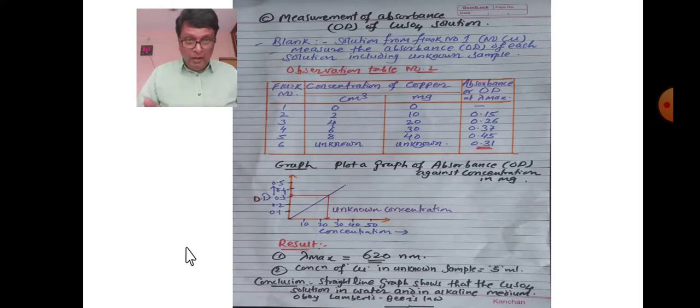Plot a graph with absorbance on the y-axis and concentration on the x-axis using values 10, 20, 30, 40 mg/ml. The graph shows a straight line passing through the origin. For the unknown with absorbance 0.31, draw a horizontal line to intersect the calibration curve, then drop a perpendicular to the x-axis to read the concentration.